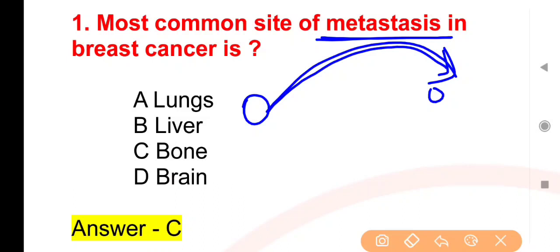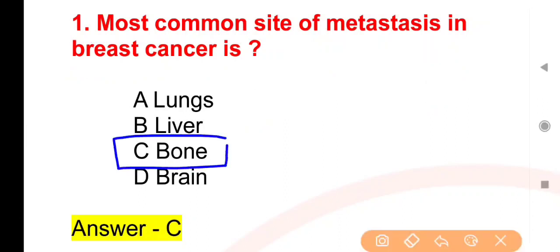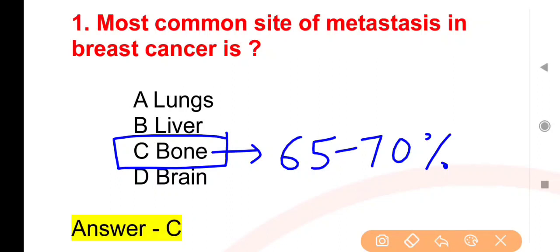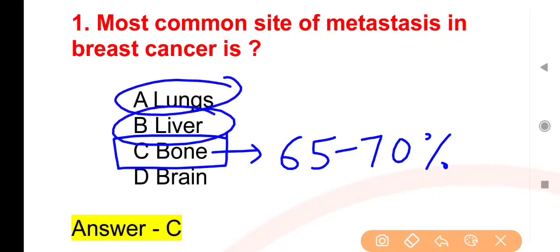Jin patients mein breast cancer hota hai, yeh breast se nikal kar sabse zyada metastasis bone mein hota hai. Bone is the highest site of metastasis of breast cancer — lagbhag 65-70% chances hote hain bone ke affect hone ke. Uske baad lungs aur liver prabhavit ho sakte hain.